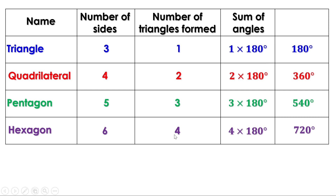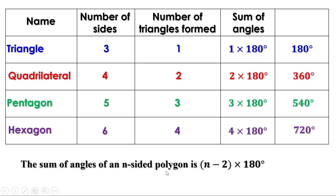Now suppose the sides are seven — how many triangles can be formed? Five, right? Now suppose there are n sides — then how many triangles can be formed? Two less than n, right? And that is written as n minus 2. So for a polygon with n sides we can make n − 2 triangles by drawing all the possible diagonals from a single vertex. And if there are n − 2 triangles, the sum of the angles is (n − 2) × 180°. That means the sum of the angles of an n-sided polygon is (n − 2) × 180°.